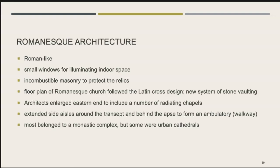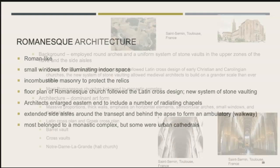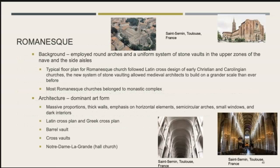Most Romanesque churches belonged to the monastic complex — that self-contained community. Some, however, were urban cathedrals located in a town or city. Romanesque churches employed round arches and a uniform system of stone vaults in the upper zones of the nave — the center aisle — and the side aisles. The typical floor plan was the Latin cross.